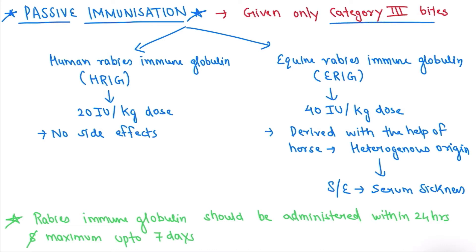There are two types of passive immunization available. The first one is Human Rabies Immunoglobulin (HRIG) and the second one is Equine Rabies Immunoglobulin (ERIG). In HRIG, the dose is 20 IU per kg. There are no side effects of HRIG.